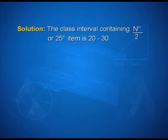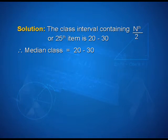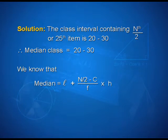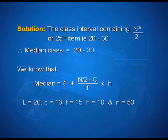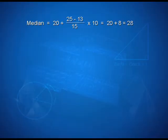Now look into the solution. The class interval containing the n/2 or 25th item is lying between 20 to 30. Therefore, median class is 20 to 30. We know that median equals L plus (n/2 minus c) upon f into h. We note that L is 20, cumulative frequency c is 13, f is 15, h is 10, and n is 50. Using the formula, median is calculated as 20 plus (25 minus 13) upon 15 into 10, that is equal to 20 plus 8, that is 28.